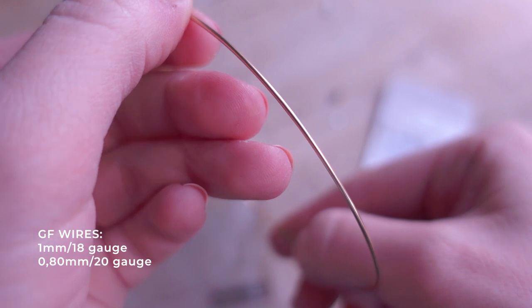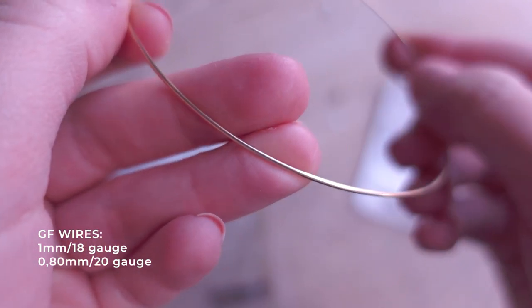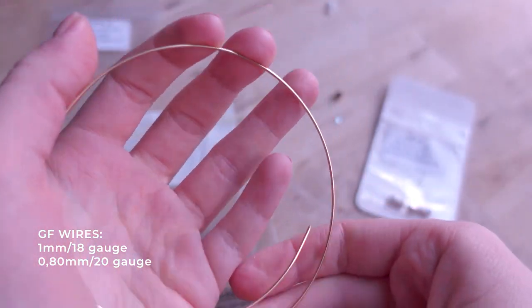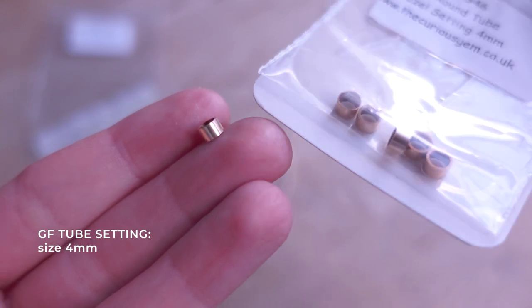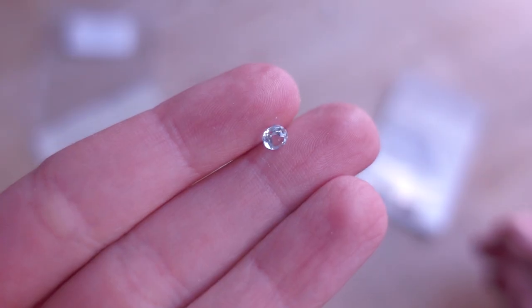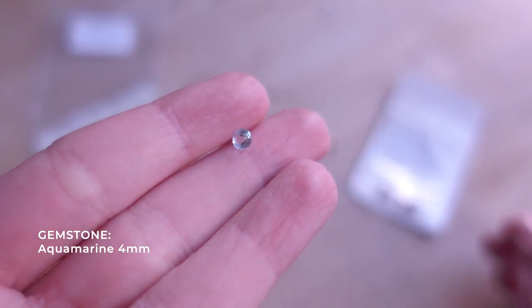To make these rings I'm going to use gold filled wires, 1 in 20 gauge and 1 in 18 gauge thickness. I'm also going to use tube setting to set the aquamarine gemstone in one of the rings. Tube and gemstone are 4 mm.